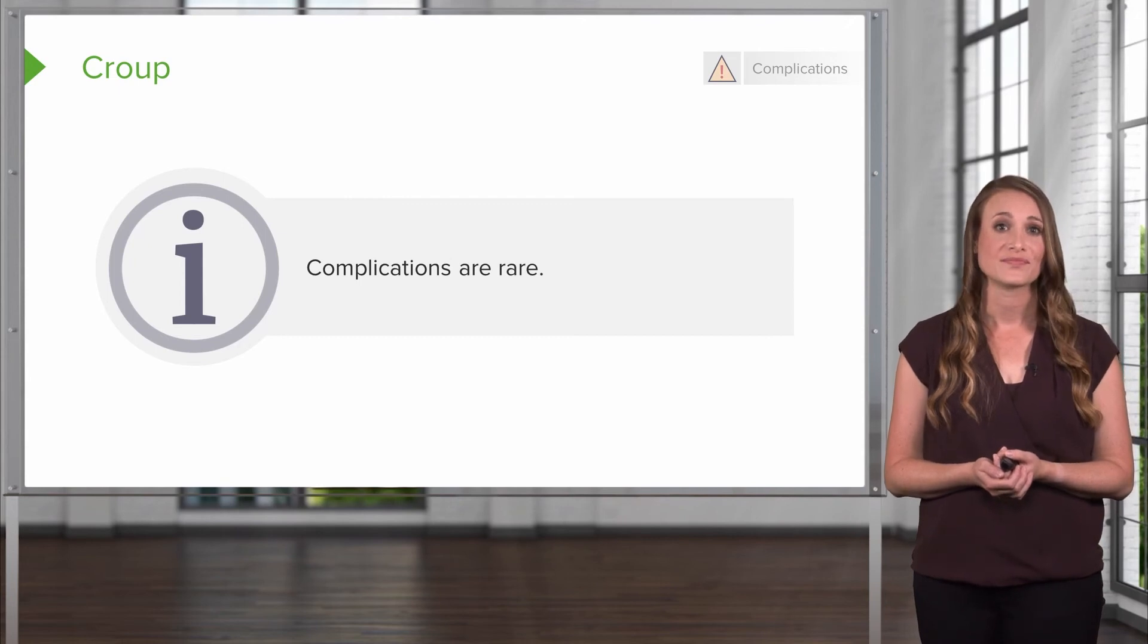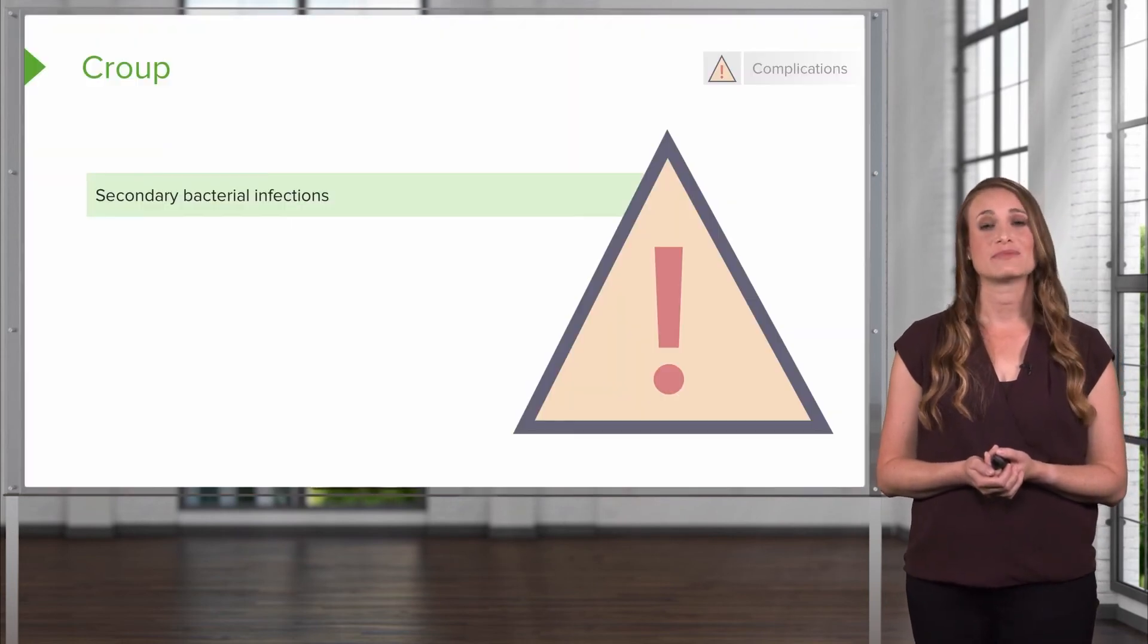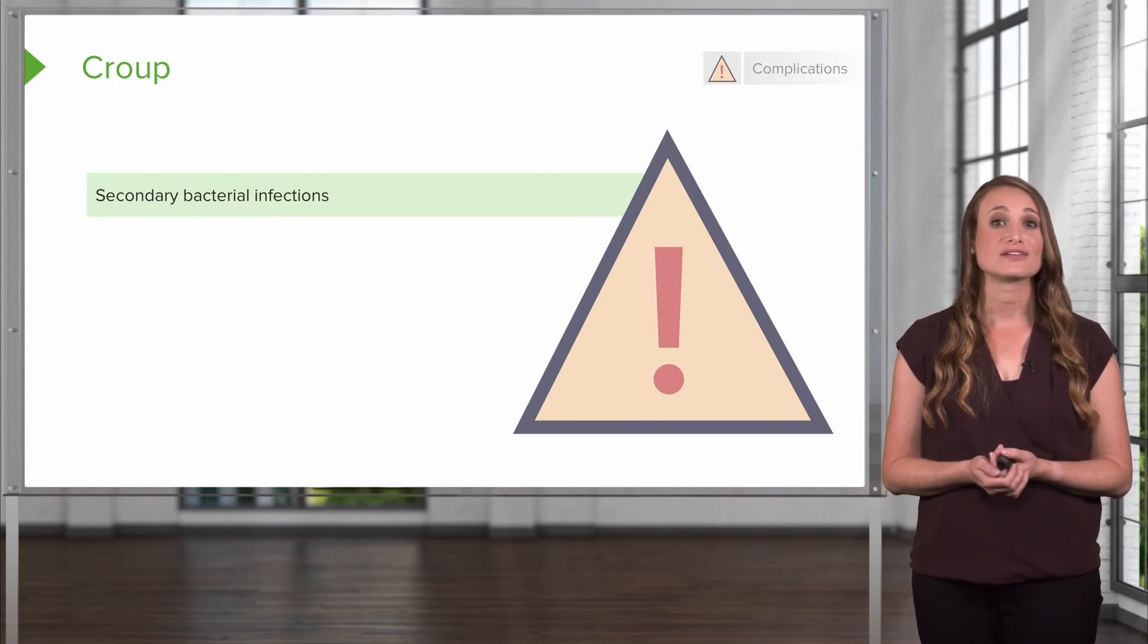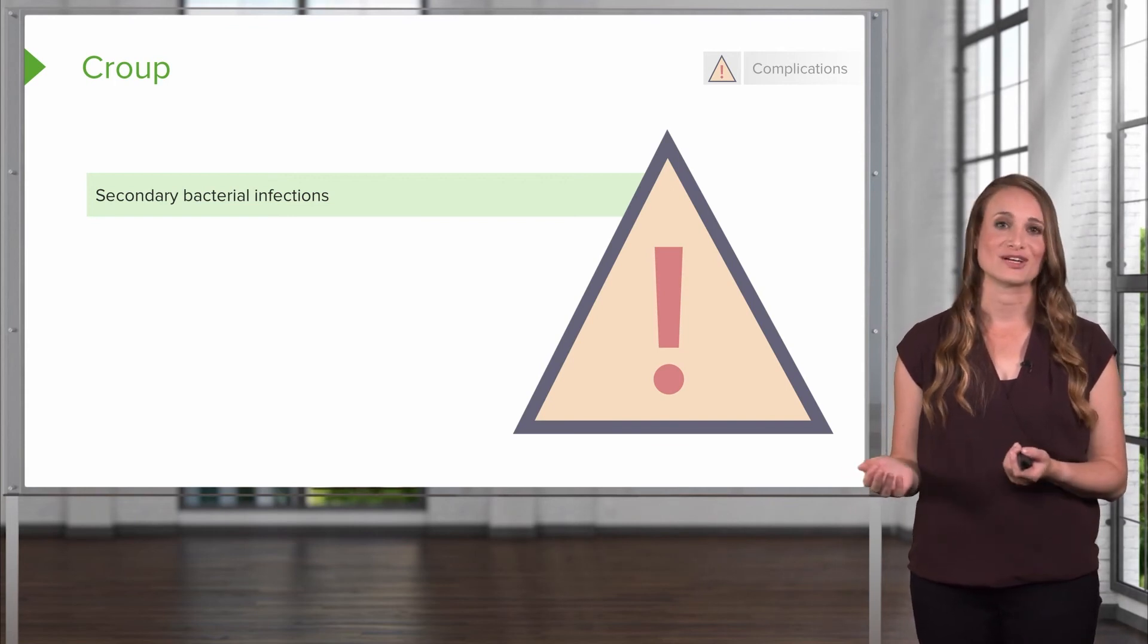Complications of croup are rare. They can include secondary bacterial infections after the viral infection has passed. This includes ear infections, sinus infections, and pneumonia.